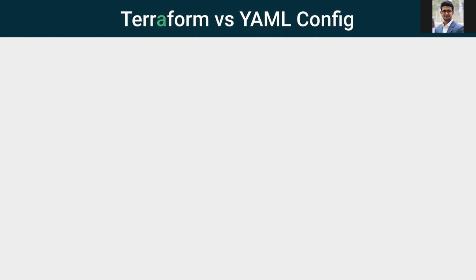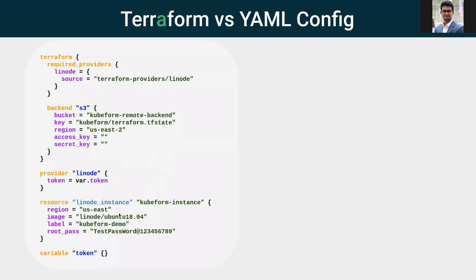Now let's see the Terraform and QFirm configuration for remote backend support. This is the Terraform configuration where a Linux instance resource is using a remote backend — in this case, an S3 remote backend. In the resource block, the resource configuration is given with region and image level. The Linux credential is given in the provider block. In the backend block, the backend bucket configuration is given: the bucket name, key, region, access key, and secret key. It references a file named terraform.tfstate inside a folder named QFirm, to be stored in an AWS S3 bucket named QFirm-remote-backend.